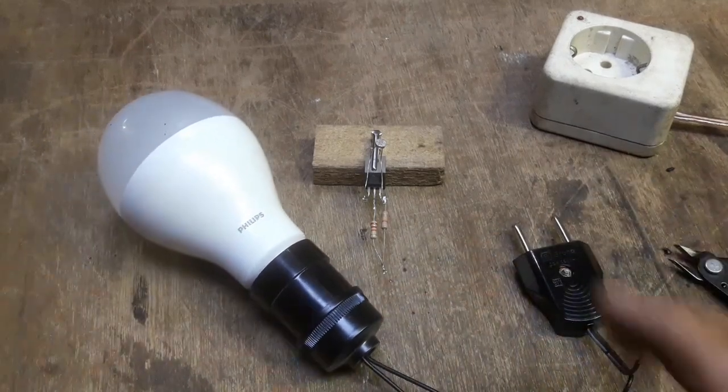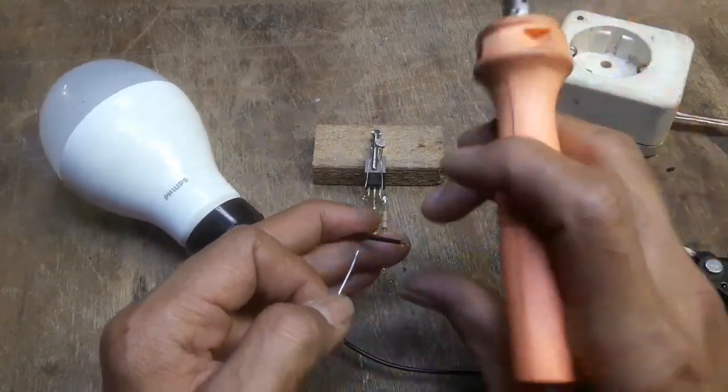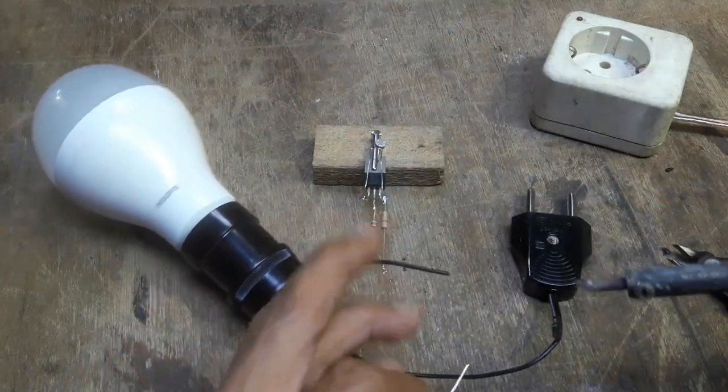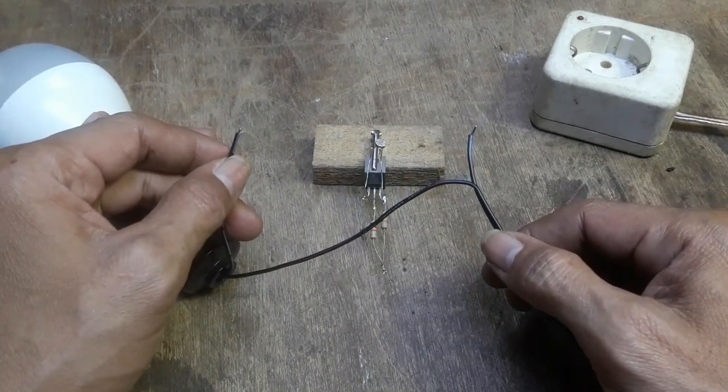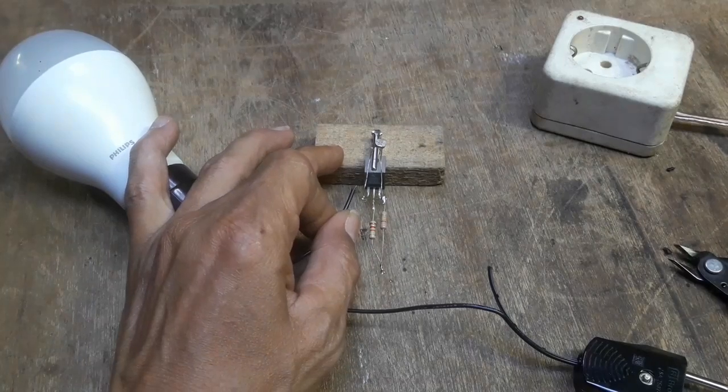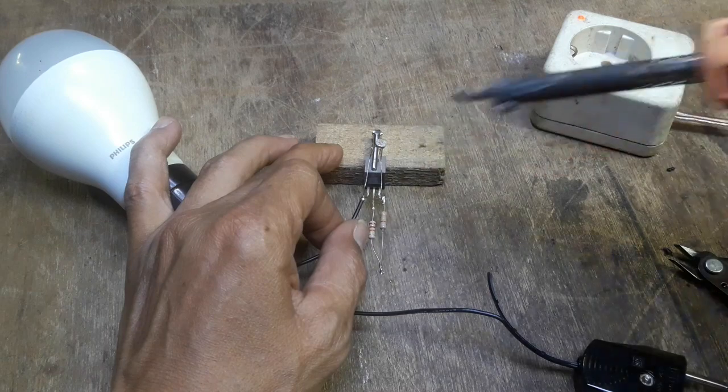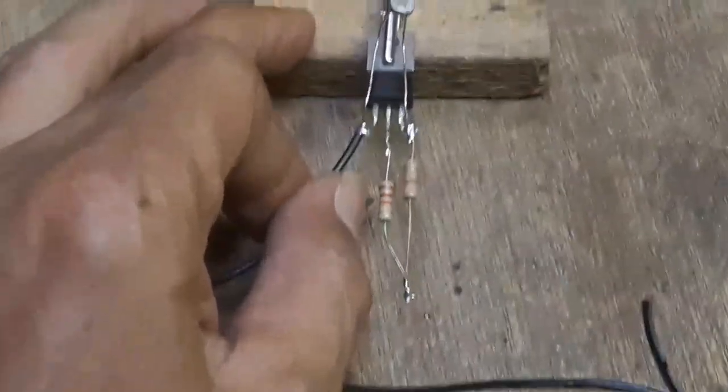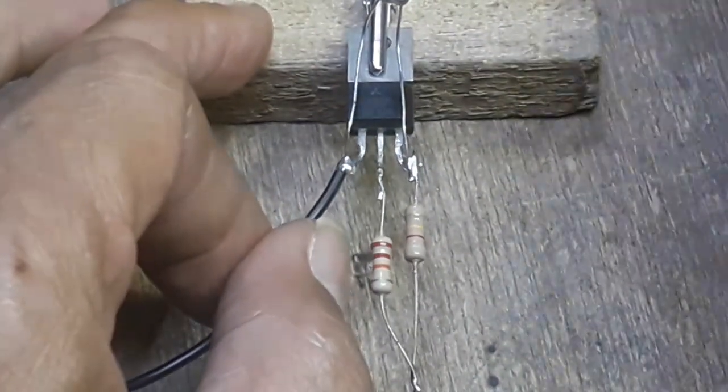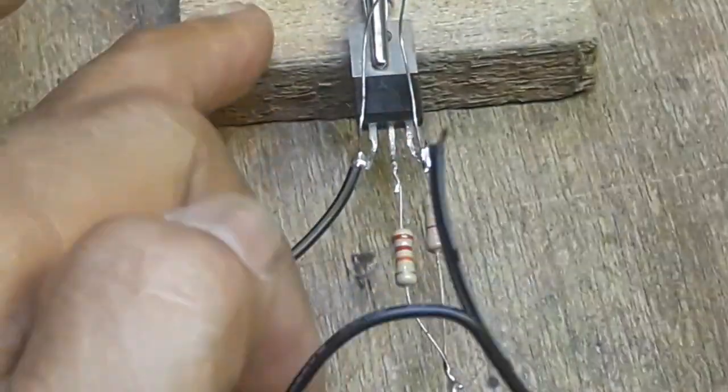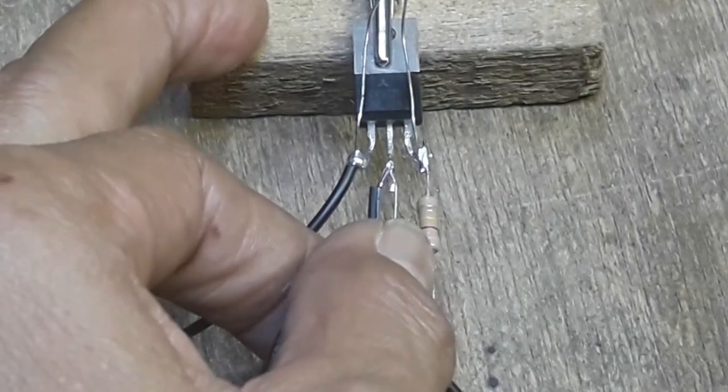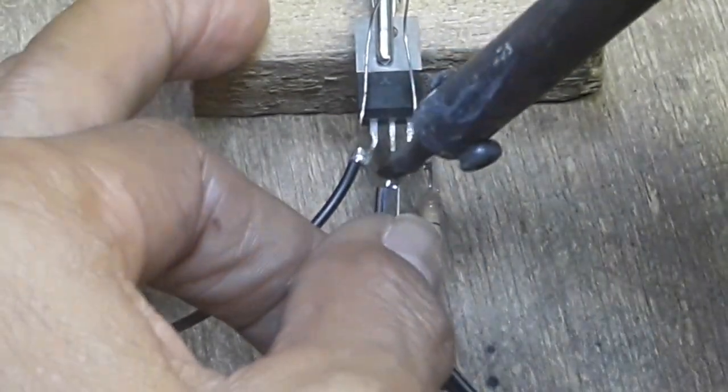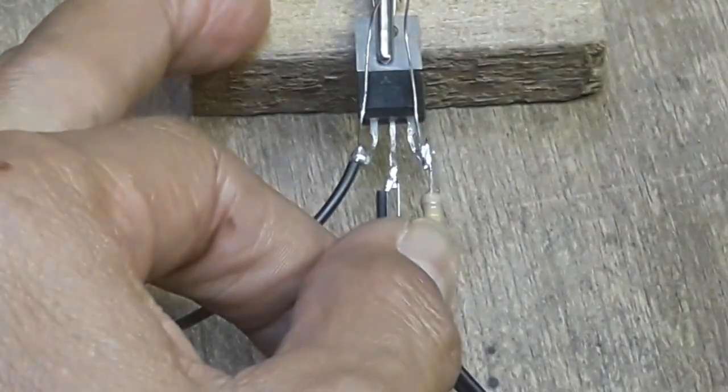Dan kita kasih timah. Di posisi out, kasihkan di katoda, di bagian pinggir ini. Nah ini, posisikan di pinggir. Sedangkan yang inputnya, bagian listrik, kasihkan di anoda, di bagian tengah sini. Nah begini cara pemasangannya, lebih jelasnya.